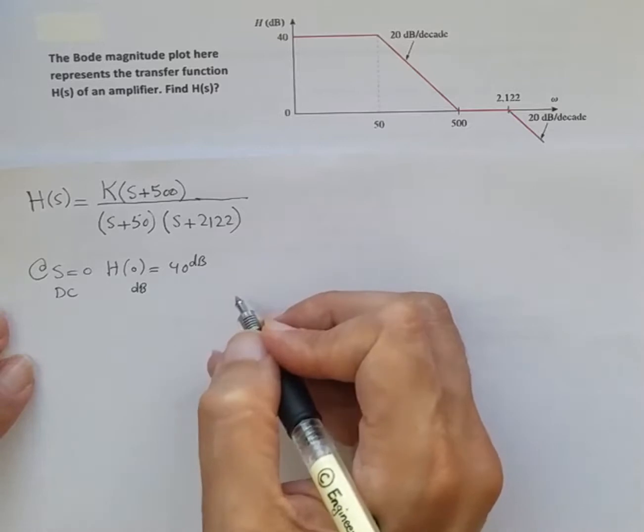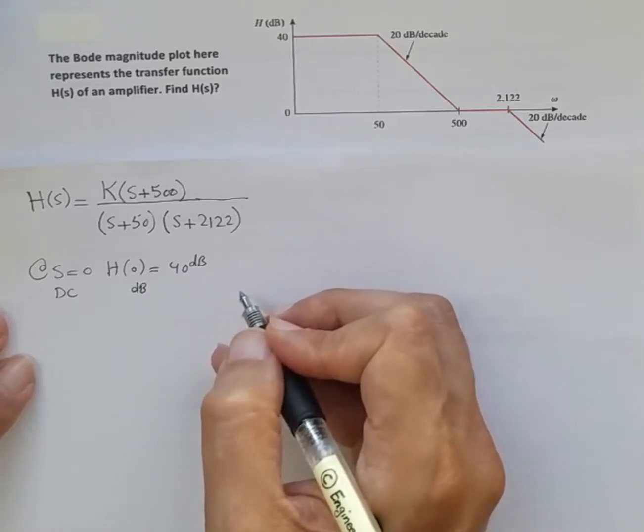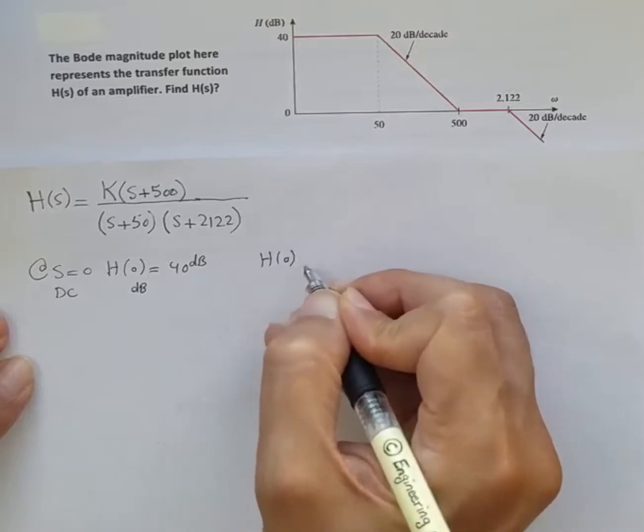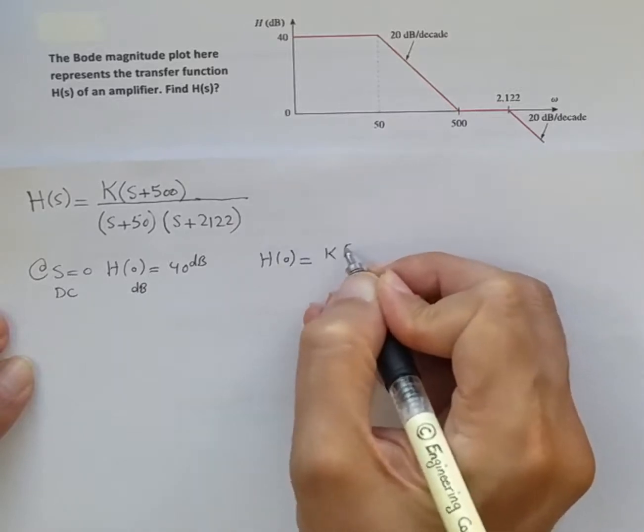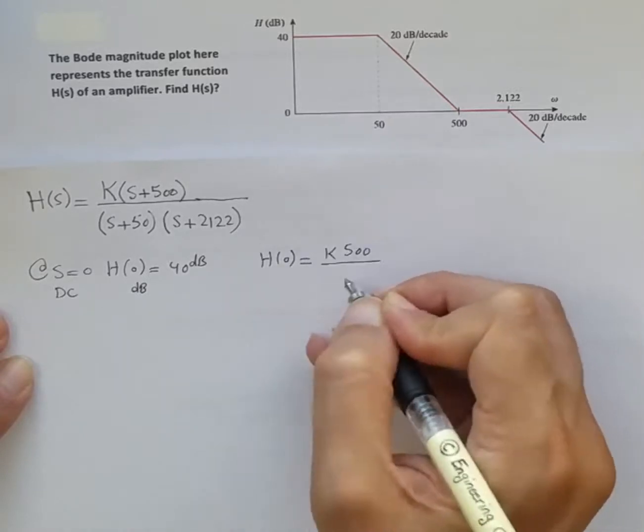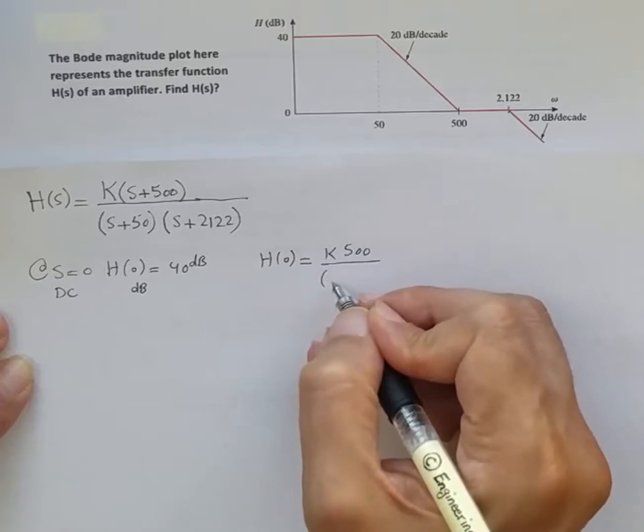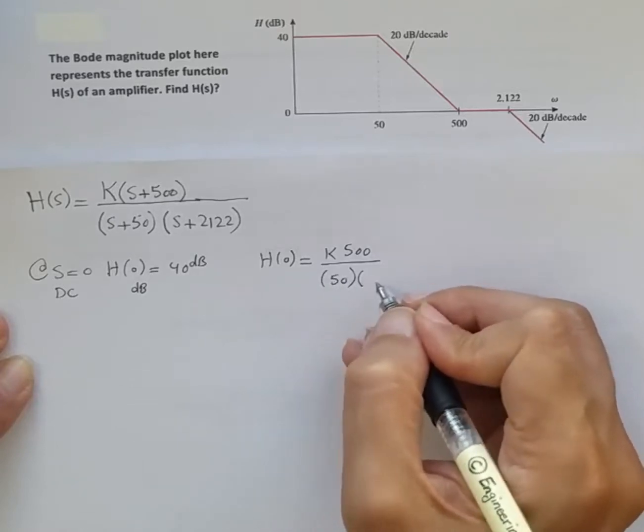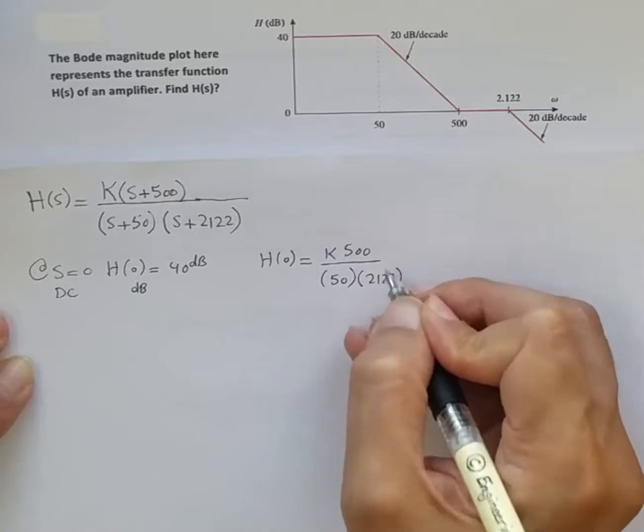Now we have to find that. The way to find it is we would say H(0) is K times 500 divided by (0 + 50), which is just 50, times (0 + 2122), which is 2122.